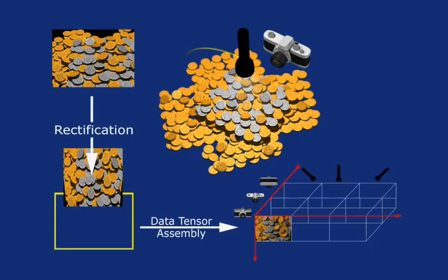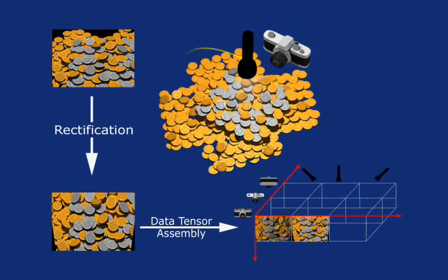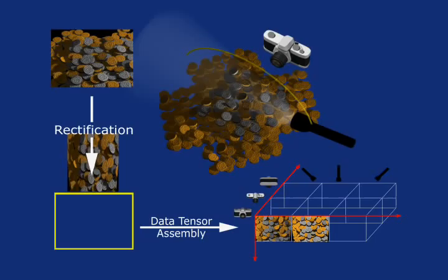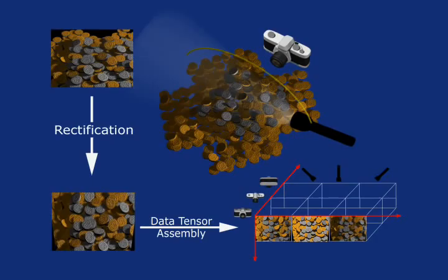Each column of this three-mode tensor spans the image texels. Each row spans different illuminations. The third mode spans different viewpoints. The data tensor is an organized set of training images which sparsely sample the viewing and illumination spheres.